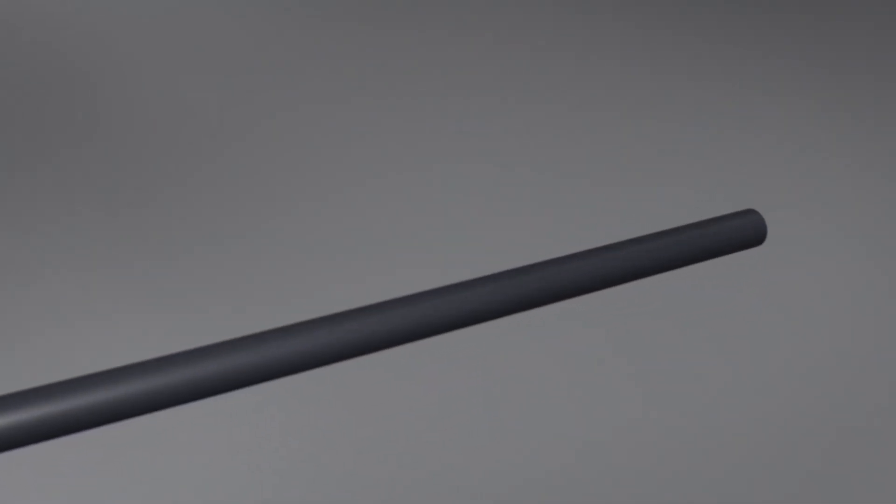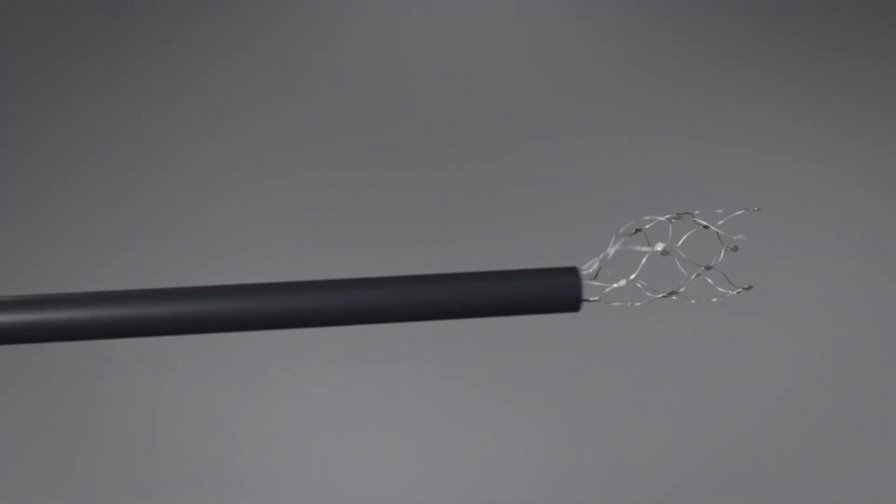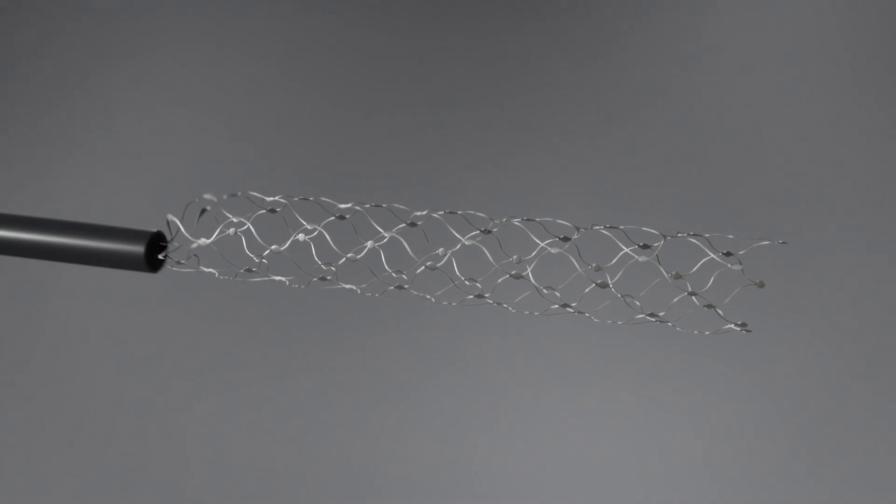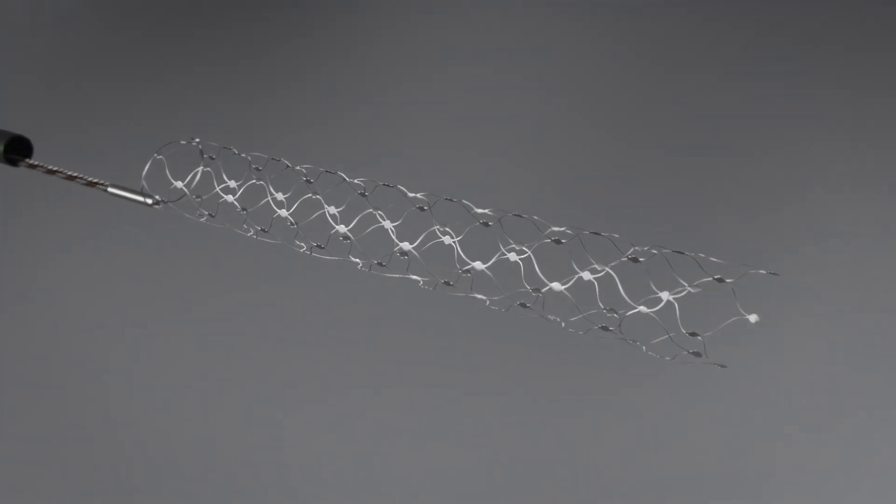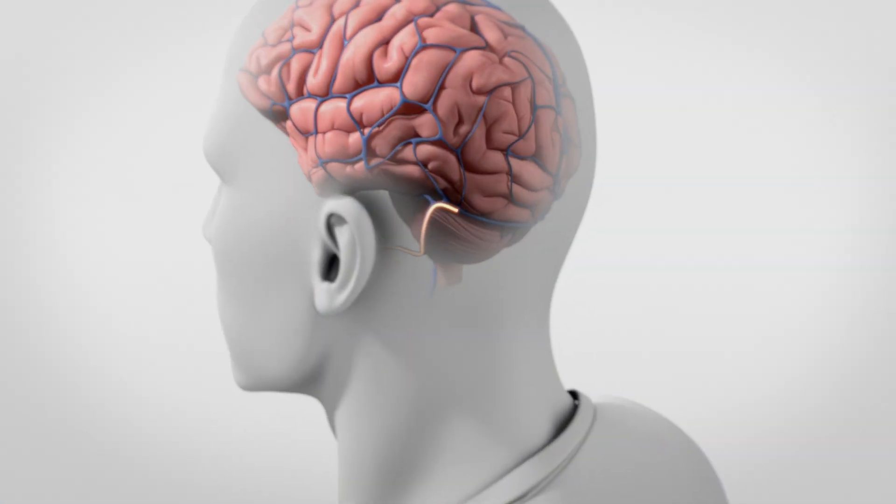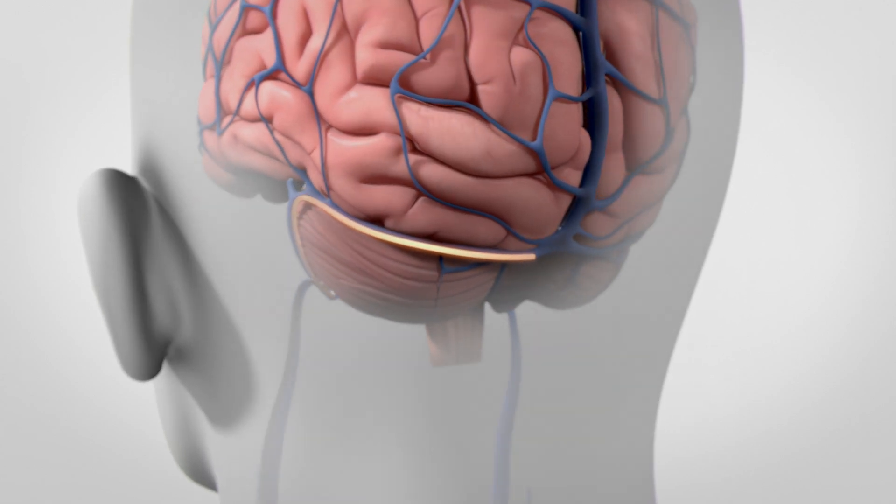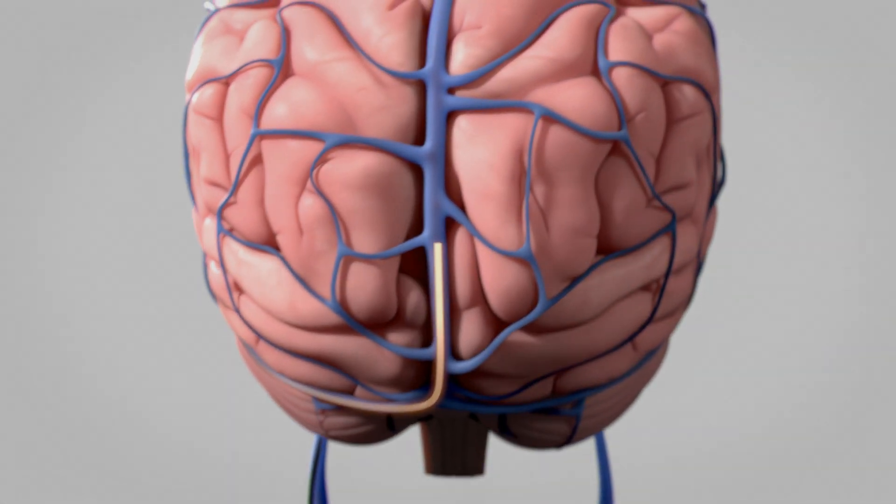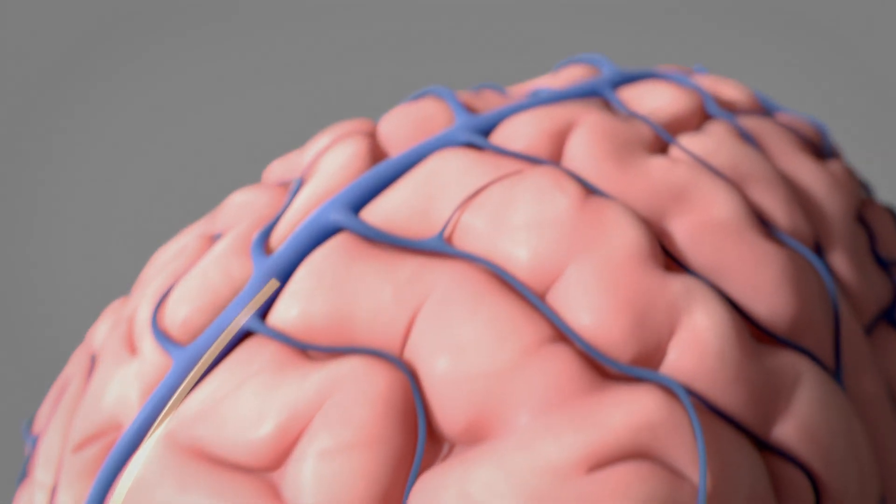The stentrode is a neural interface designed to overcome paralysis by creating a digital bypass from brain to assistive device. An investigational device, the stentrode is inserted via a catheter into the jugular vein and maneuvered into the brain without the need for open brain surgery.